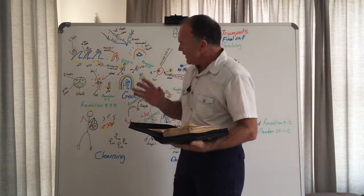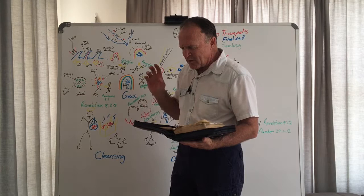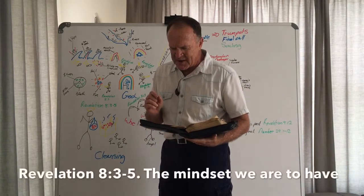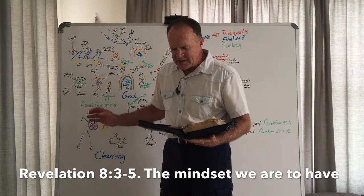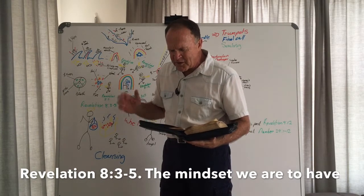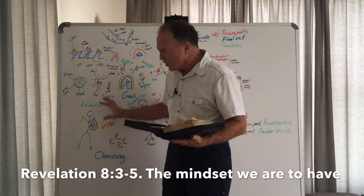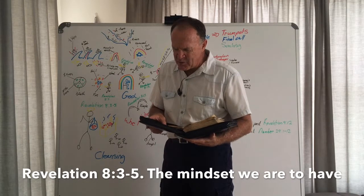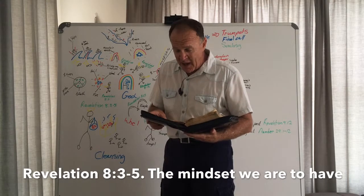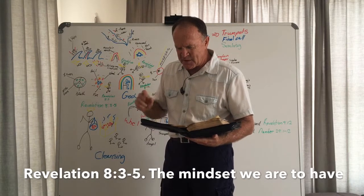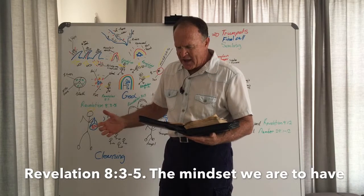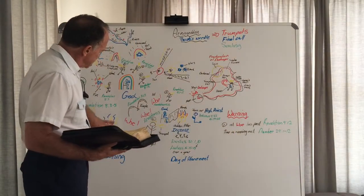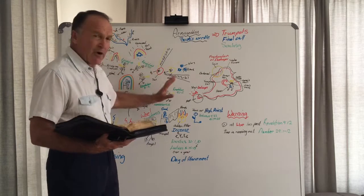In Revelation chapter 8, verses 3 and 5, our attention was again drawn to the golden altar. It says, Another angel who had a golden censer came and stood at the altar. He was given much incense to offer with prayer of all the saints on the golden altar before the throne. The smoke of the incense together with the prayer of the saints went up before God from the angel's hand. Then the angel took the censer, filled it with fire from the altar, and hurled it on the earth. And there came peals of thunder, rumblings, flashes of lightning, and an earthquake.